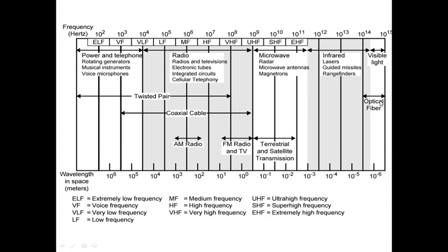In the upper part of the diagram, you can see frequencies specified in words: ELF means extremely low frequency, VF means voice frequency, VLF means very low frequency, and LF means low frequency. This is the allocation spectrum — showing how signals are passed in the air and in which range they can be used. Optical fiber can use the signal range from 10^14 to 10^15. Radio signals use medium and high frequency ranges; microwave uses ultra high frequency, super high frequency, and extremely high frequency.